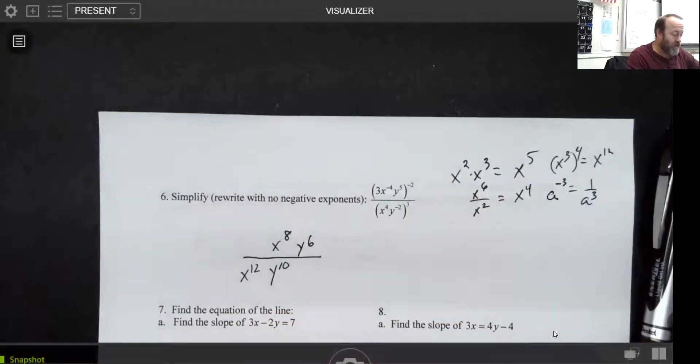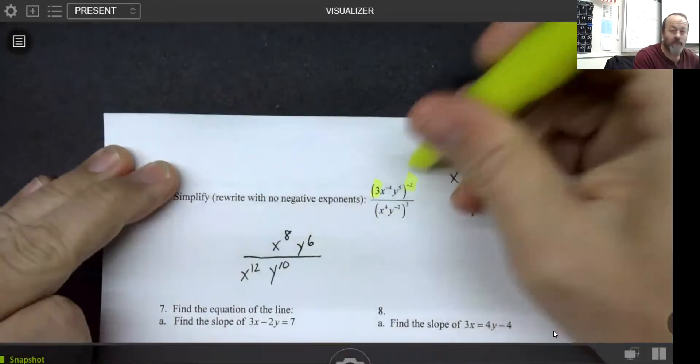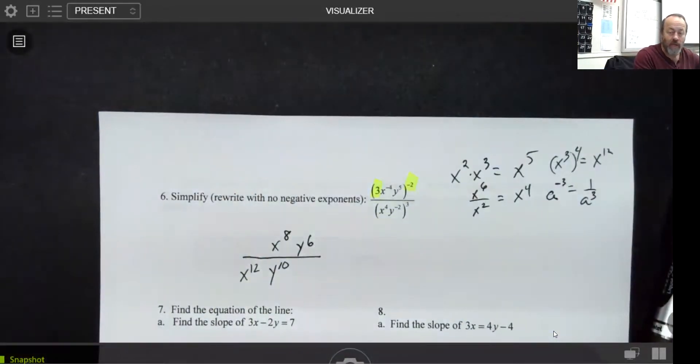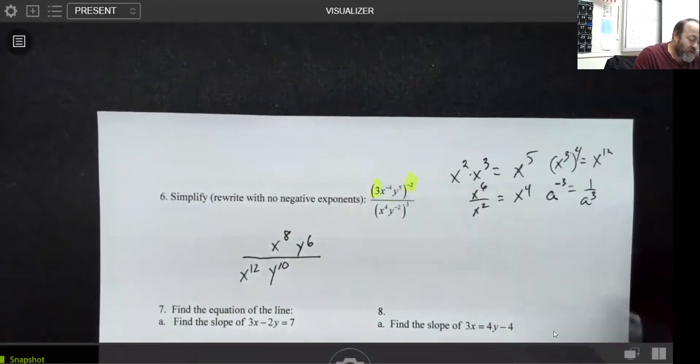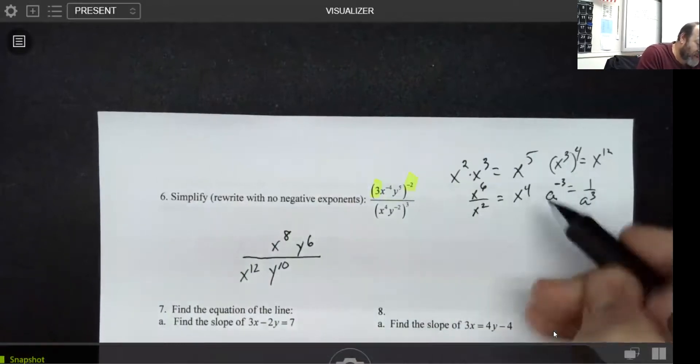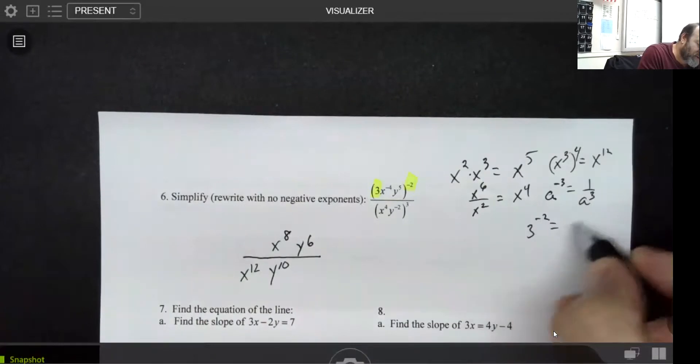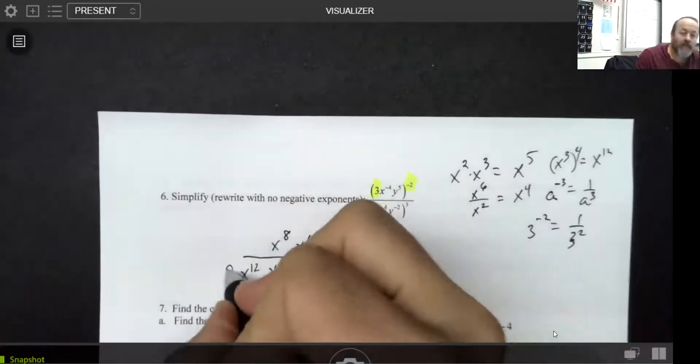Now, you'll notice that I waited until the bitter end to deal with this three to the minus two, because that is actually a part that people kind of struggle with. So notice that according to this rule right here, this would actually be three to the minus two is actually one over three to the two. So that actually makes it a nine in the bottom.